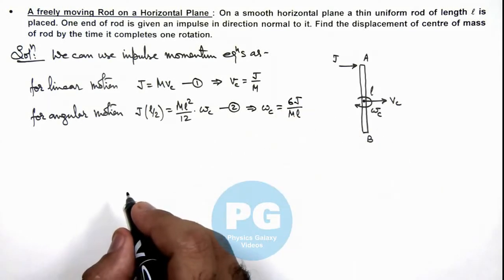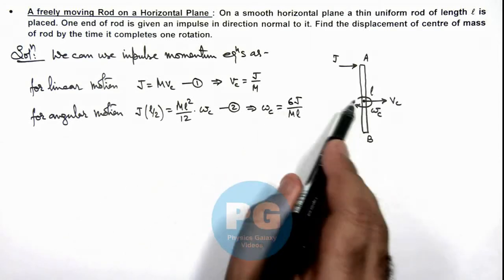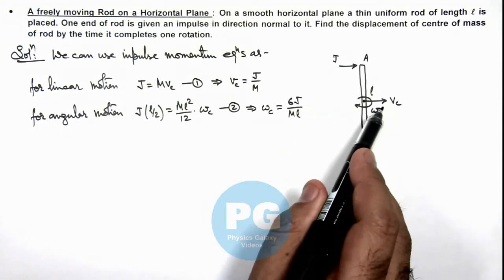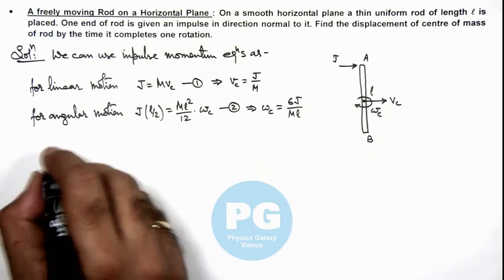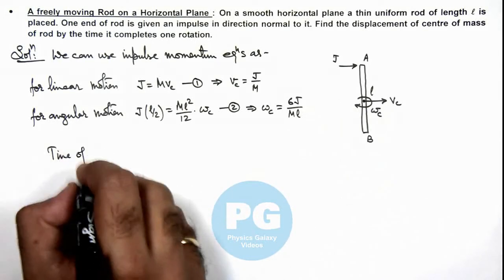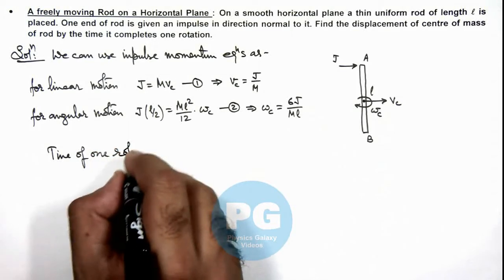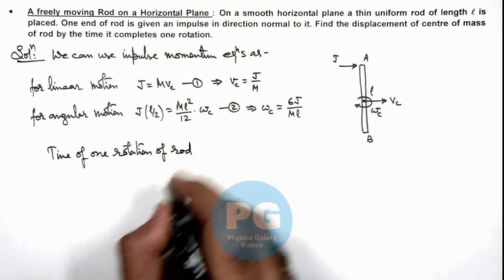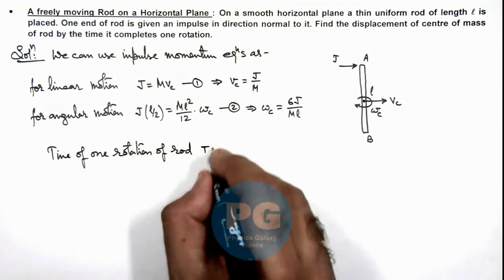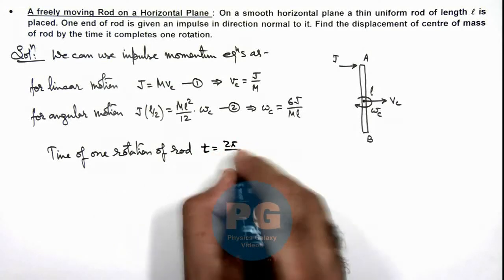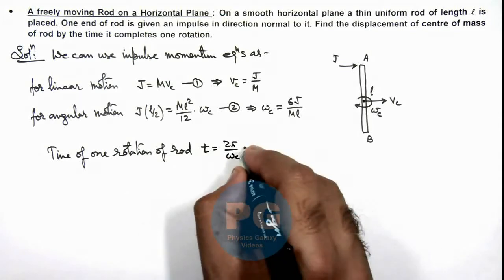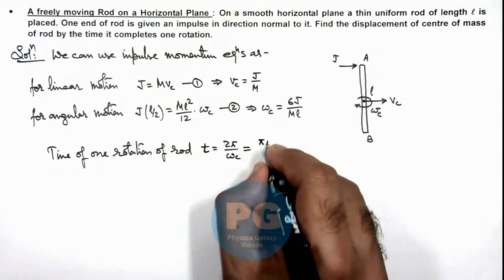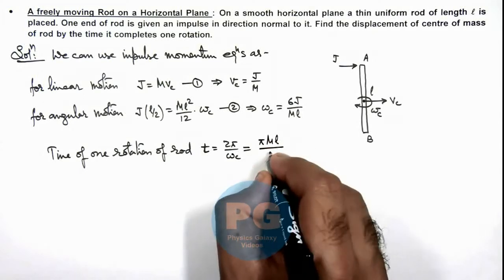Now in this situation, this is the angular speed with which the rod starts rotating and this is the linear speed of center of mass. So here, if we calculate the time of one rotation of rod, then here we can directly write this time is equal to 2 pie by omega_c. And here if we substitute the value of omega_c over here, this gives us pie ml divided by 3j.